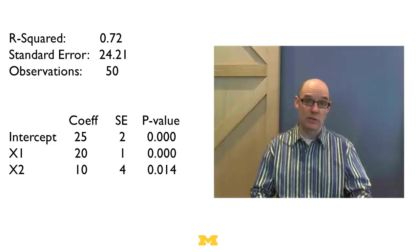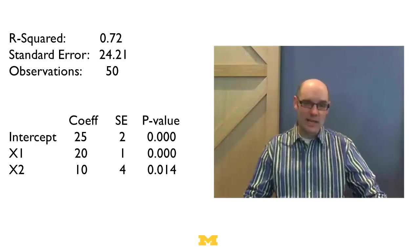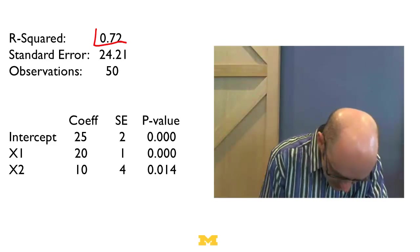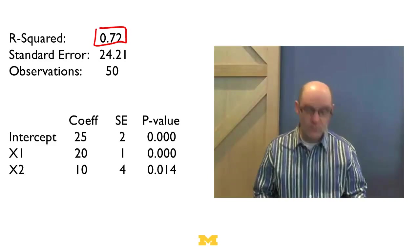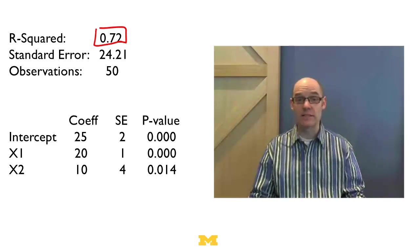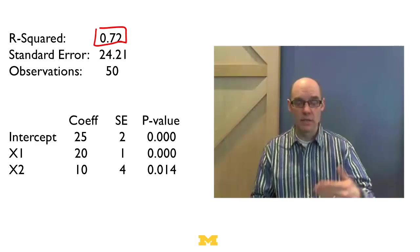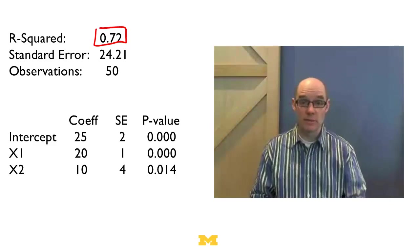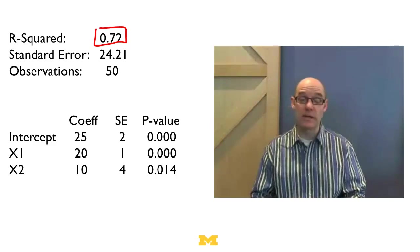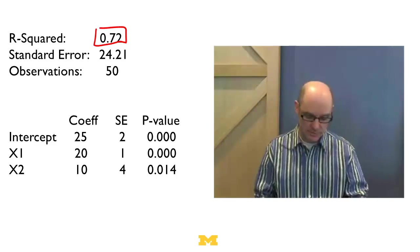So here we go, here's some regression output. Looks a little scary, but let's just relax a second. So let's look first and see what we see. First we see a thing that says r squared is .72. What is that telling us? Well, we already know. That's saying there's a whole bunch of variation in the data, and 72% of it was explained by our model. So that means a linear model, in this case, is explaining 72% of the variation. That's totally great.